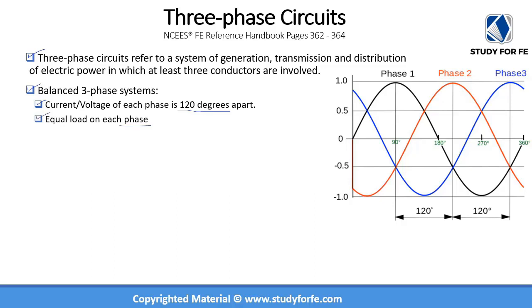The diagram on the right shows phase one, phase two, and phase three. You can see that they are 120 degrees apart and the amplitude of each of these phases is identical.